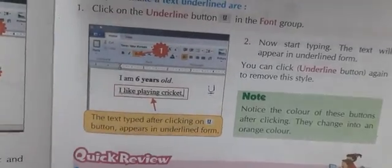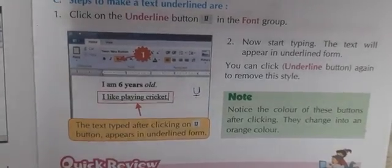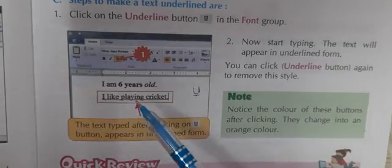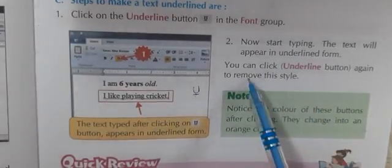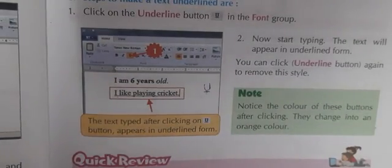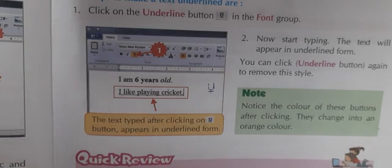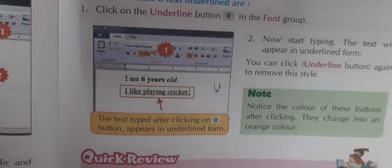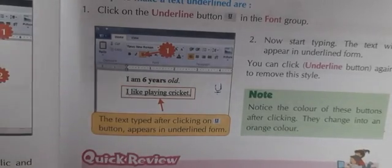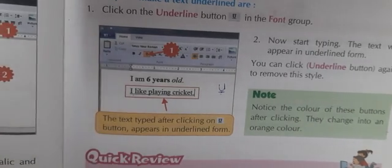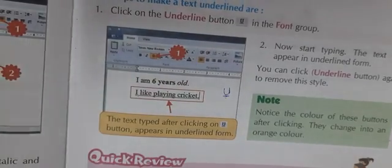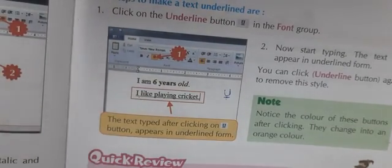We can change the text to underline by selecting the underline option, and if you want to remove this style, click again on the underline button. So students, in this chapter we have learned how we can apply text formatting. Text formatting means changing the font face, font color, font size, and style. In font face we learned how we can change the look of the text, then we can change the color of the text, and then we learned how we can change the font size and style.